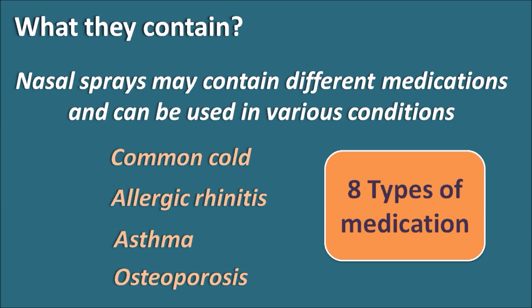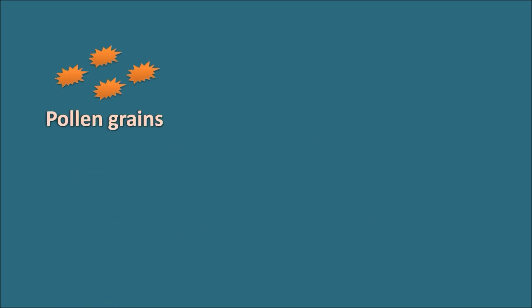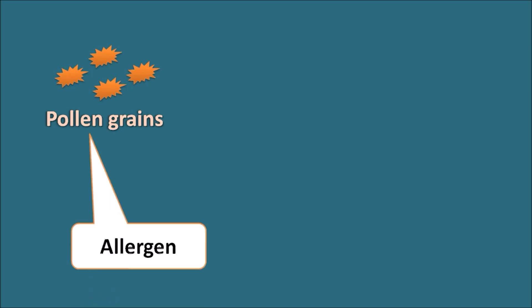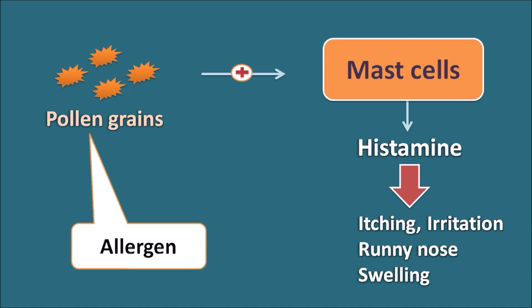The first type is antihistamines. Foreign particles like pollen grains can act as allergens, stimulating mast cells within the body to release the inflammatory mediator histamine. Histamine produces an allergic response causing itching, irritation, runny nose, and swelling, all of which can be reduced by antihistamines.